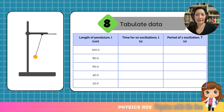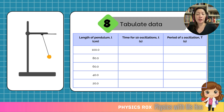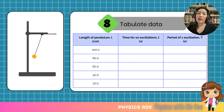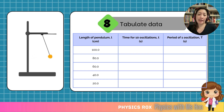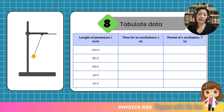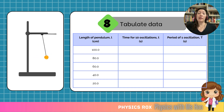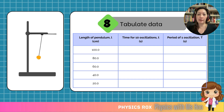Now we need to tabulate the data. Based on our procedure, we would need to measure and record the following values: first, the manipulated variable — the length of the pendulum; then the time for 10 oscillations; and from that, we calculate and record the period of one oscillation. When tabulating data, make sure you write the units in the header, and the values inside the table itself are only the numerical values without units. Here we have the table with only the values for our manipulated variable, since if you haven't conducted the experiment, you won't have values to fill in.